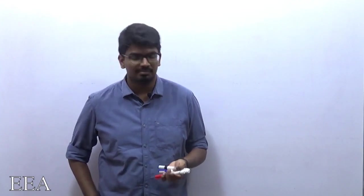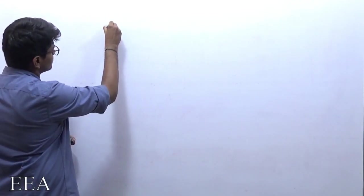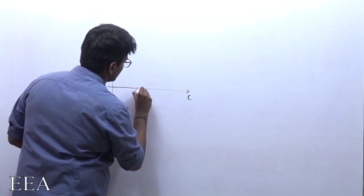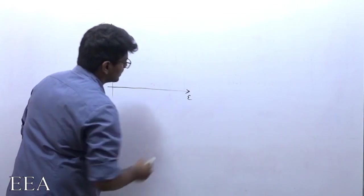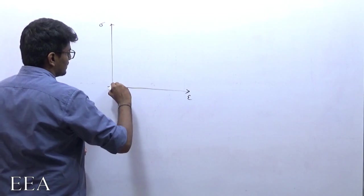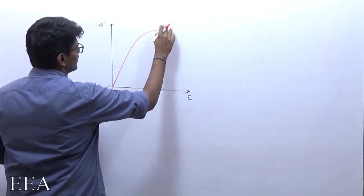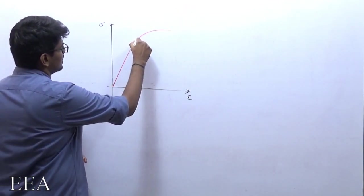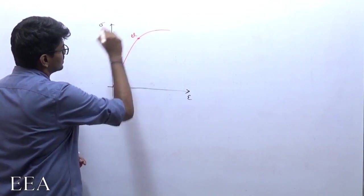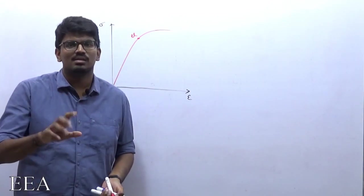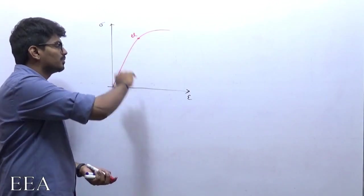Consider a stress-strain diagram. This concept is very useful because recently, in GATE, they started asking questions from this concept. Let me take this as the elastic limit. As I said, the elastic limit, proportionality limit, and yield point — all three will be taken as the same most of the times.